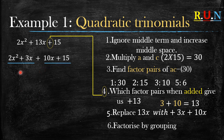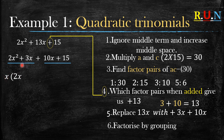If you don't know how to factorize by grouping, I'll leave a link in the description below. When factorizing by grouping, we take two terms and factorize them separately. For the first two terms, the common factor is x. So 2x² divided by x gives 2x, and 3x divided by x gives positive 3.